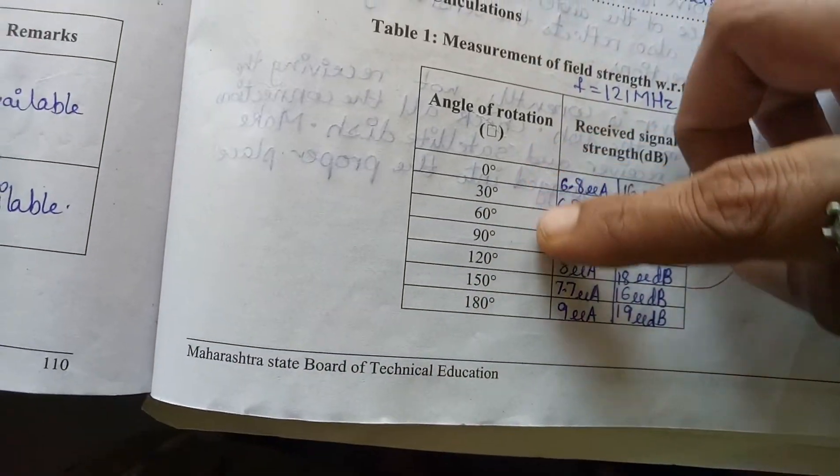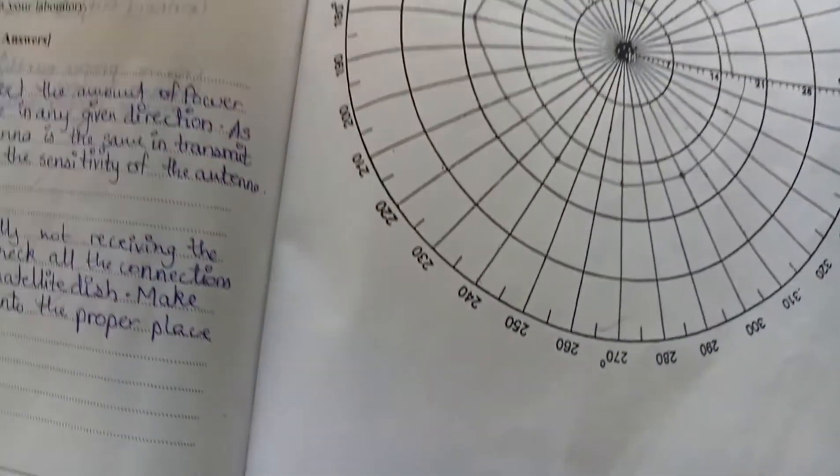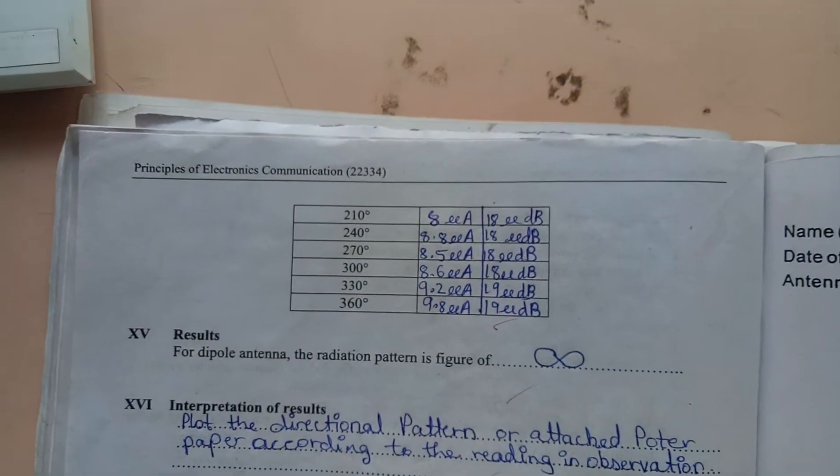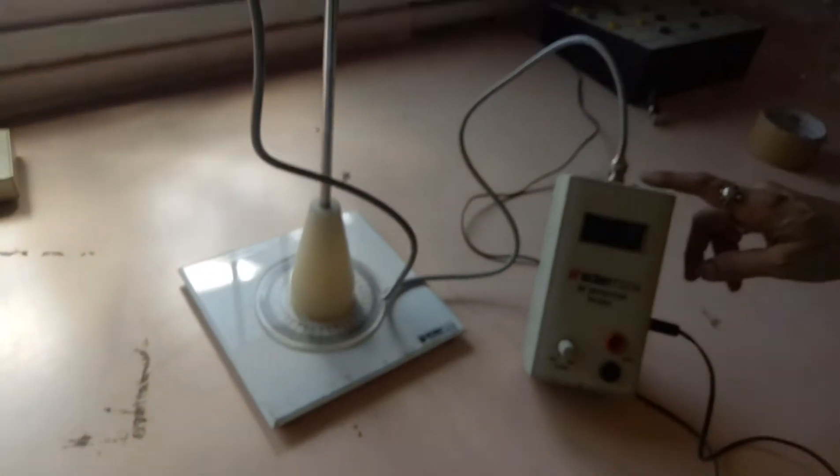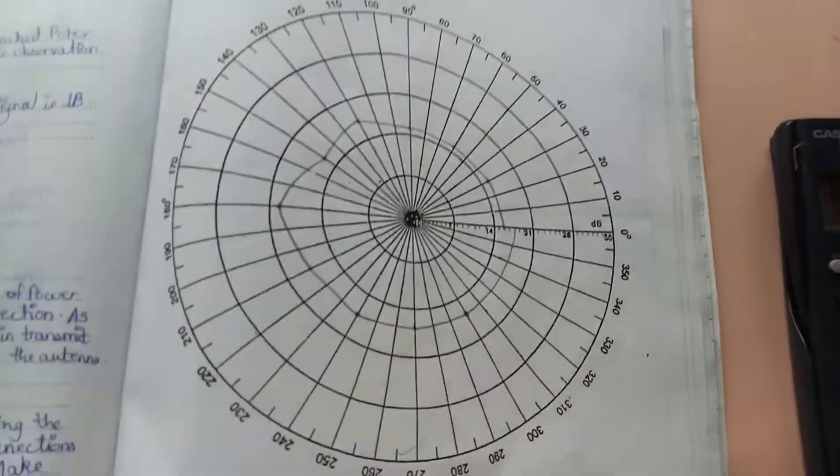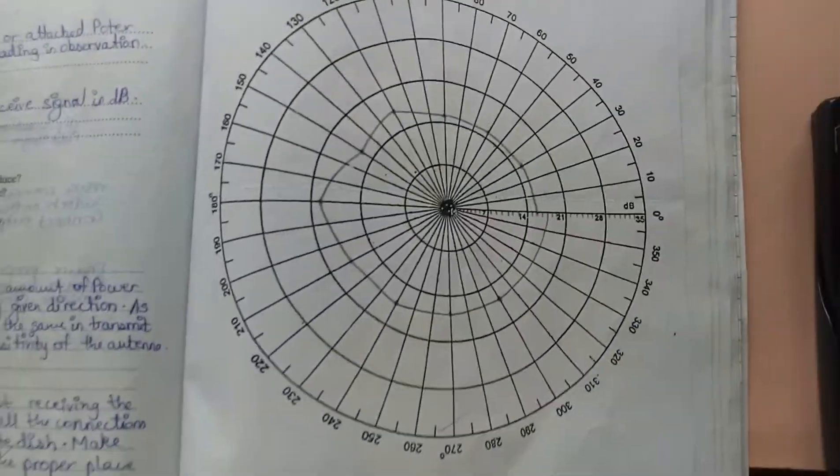In this way, you rotate the angle from 0 to 360 degrees, calculate the power and convert into decibel form, and finally generate the radiation pattern. Thank you all.